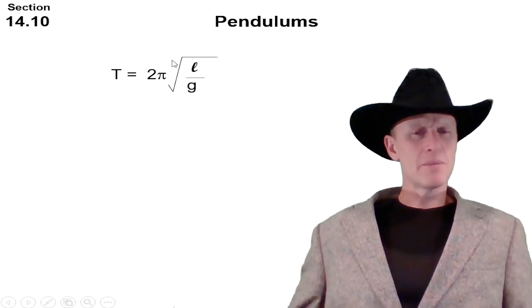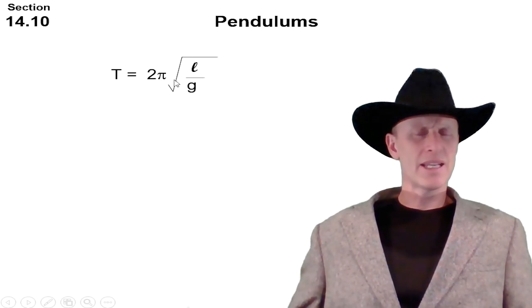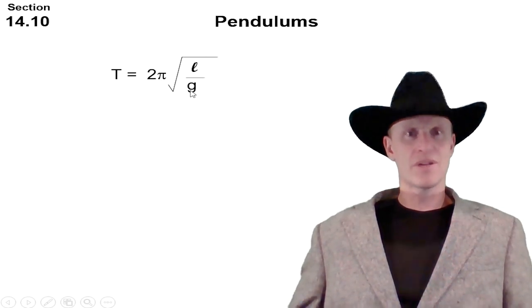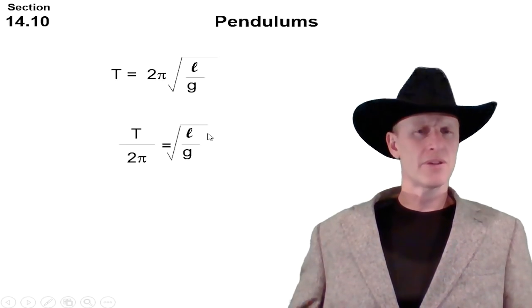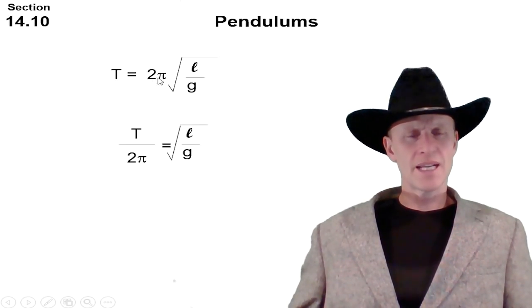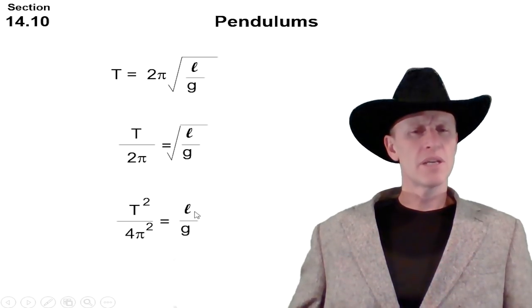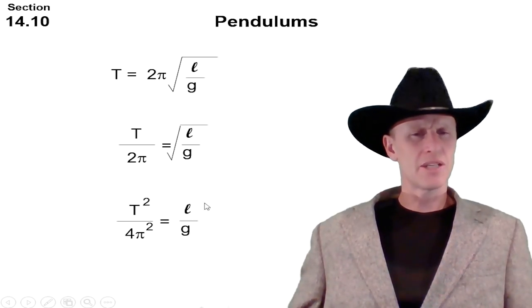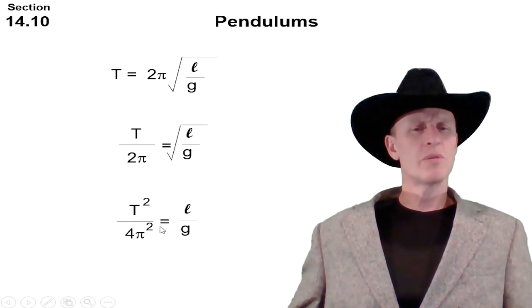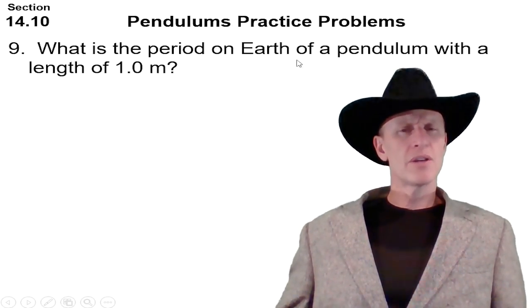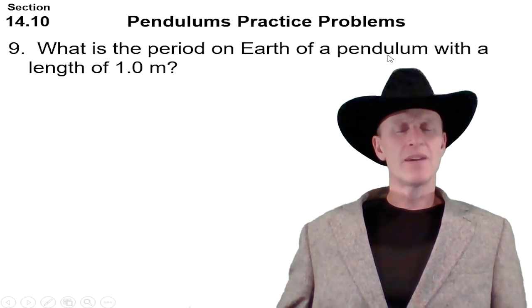Now this formula can be manipulated a little bit so that we can ask questions like what's the period, but also what's the length, and what's even gravity. Maybe we switch planets on you. So if we divide each side by 2 pi and then square both sides, we end up with this formula, and I like this relationship better when we're working with pendulums.